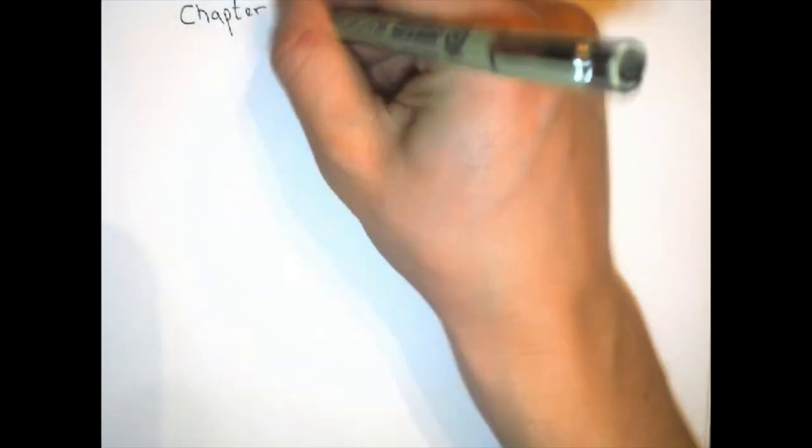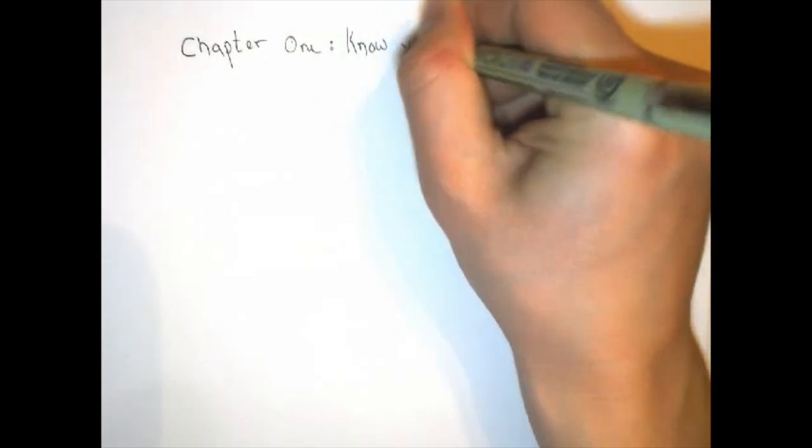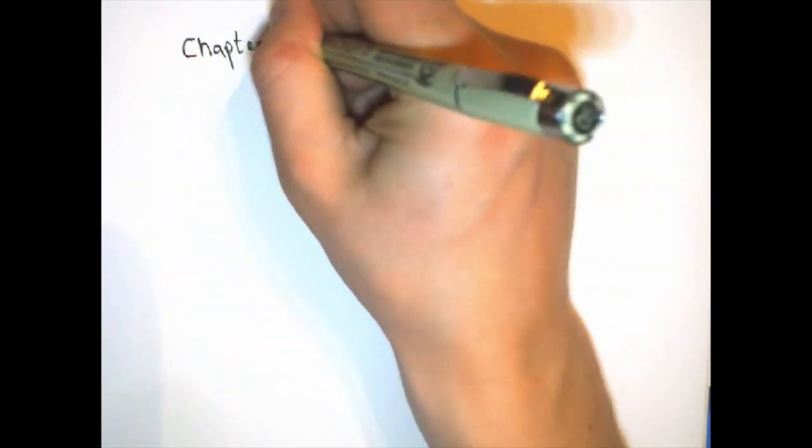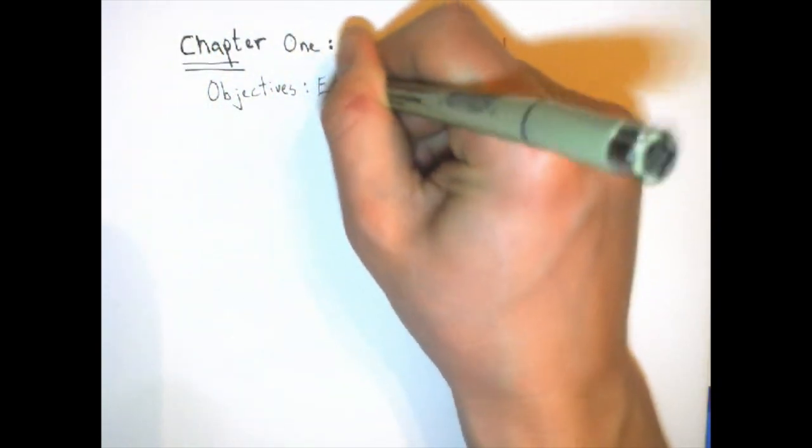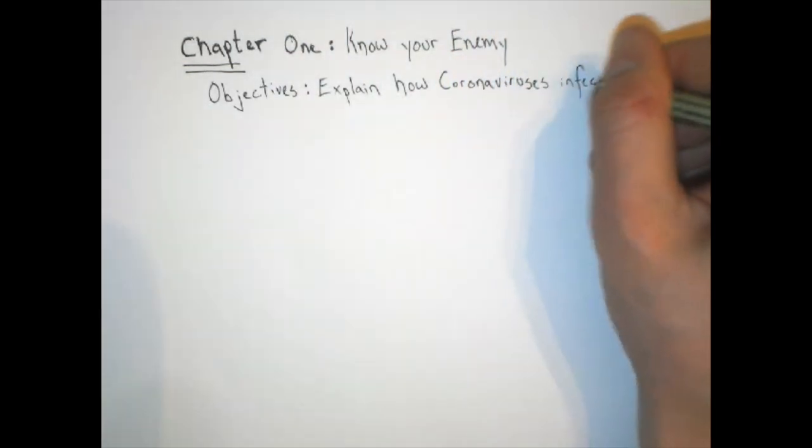The first step in gauging a problem like this is to know what you're dealing with. In this lesson, I'm going to explain what we currently know about coronaviruses, how they infect our cells, and how they replicate in our tissues, because once you know how they normally operate, you can decide on how to block those normal operations.